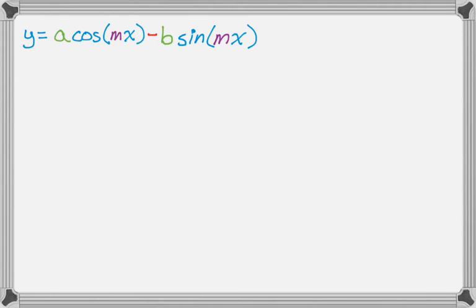So let's say that I start with y equals a cosine of mx minus b sine of mx. So that's what I'm starting with. And it's crucial that you understand that a and b could potentially be the sine and cosine of an angle, or the cosine and sine, respectively.